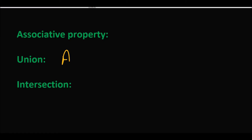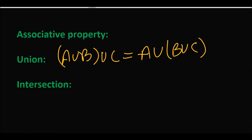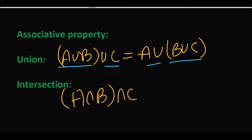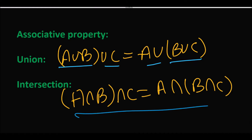उसके बाद हमारे पास Associative Property आती है। Union की Associative Property: (A union B) union C = A union (B union C). यानि left hand side में A union B पहले find out होता है फिर union C होता है, और right hand side में B union C पहले find out करते हैं फिर A union करते हैं — दोनों के answers similar आते हैं। Intersection की case में: (A intersection B) intersection C = A intersection (B intersection C).